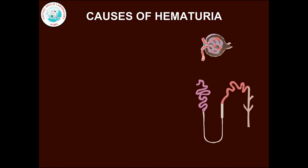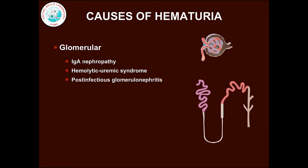Causes of hematuria are classified as glomerular and non-glomerular. Glomerular hematuria can be caused by IgA nephropathy, hemolytic uremic syndrome, post-infectious glomerulonephritis, membranoproliferative glomerulonephritis, Alport syndrome, and lupus nephritis.